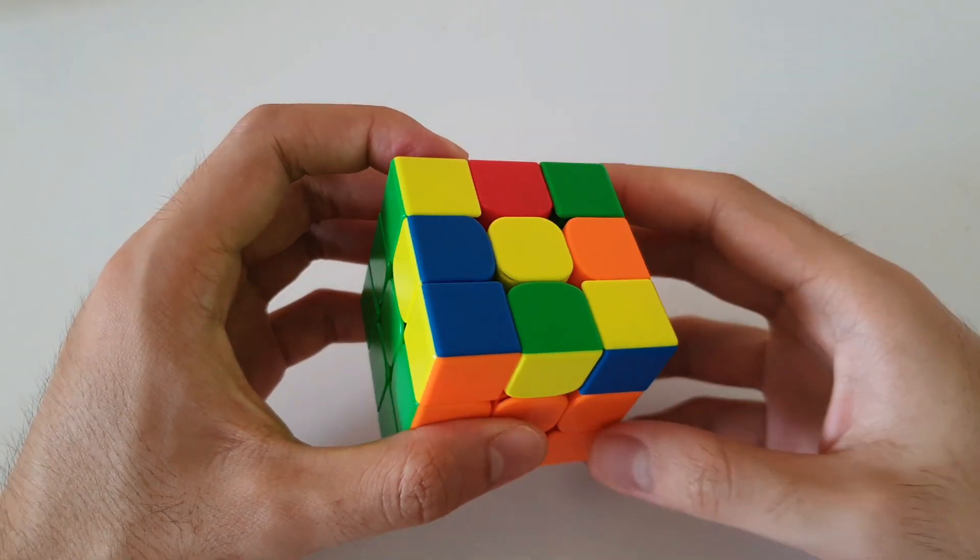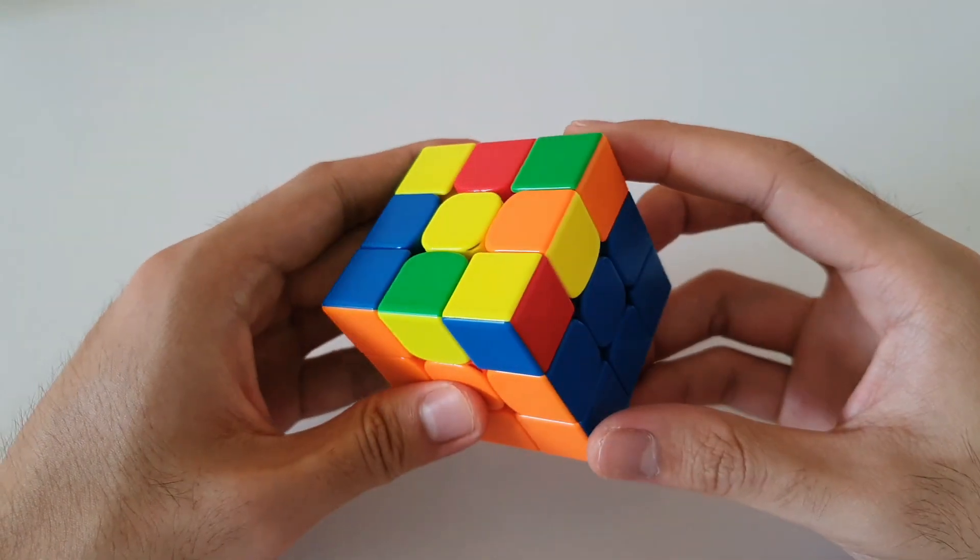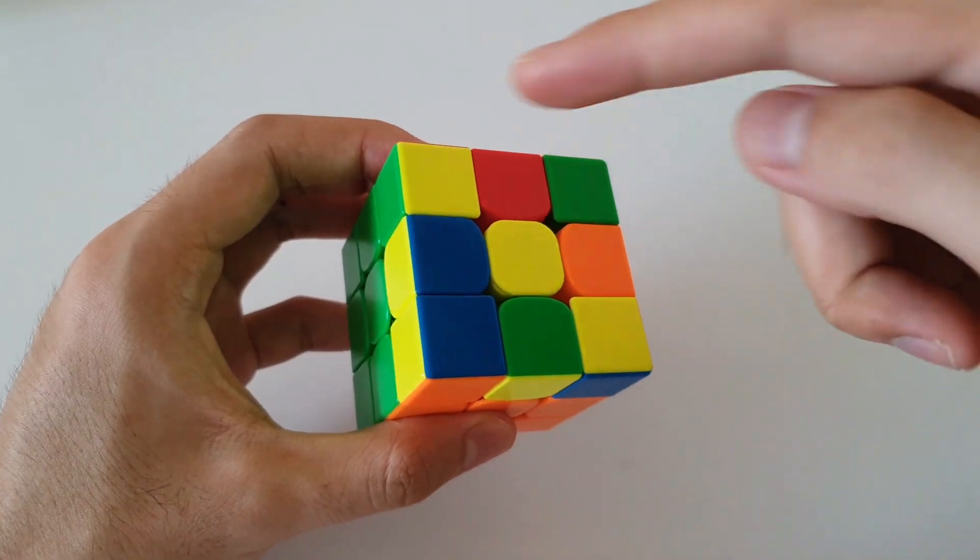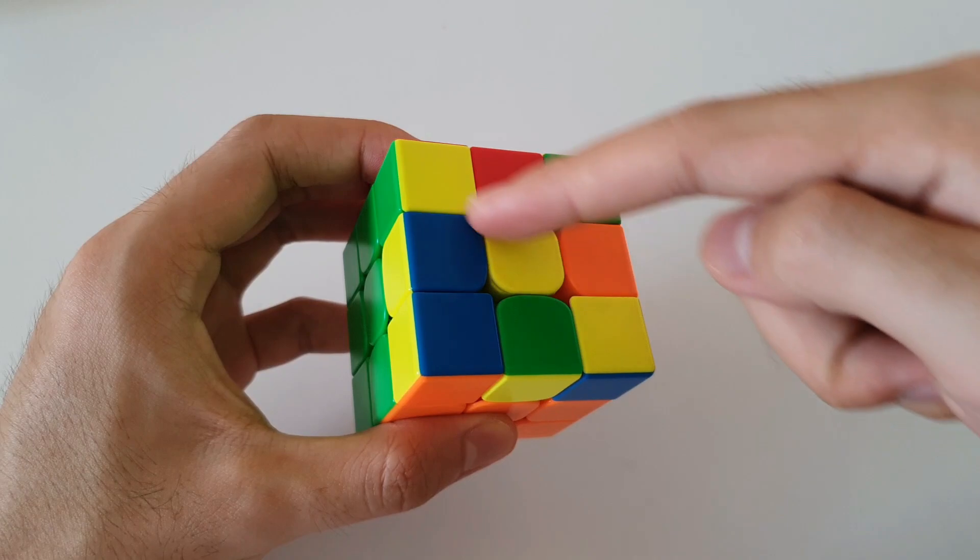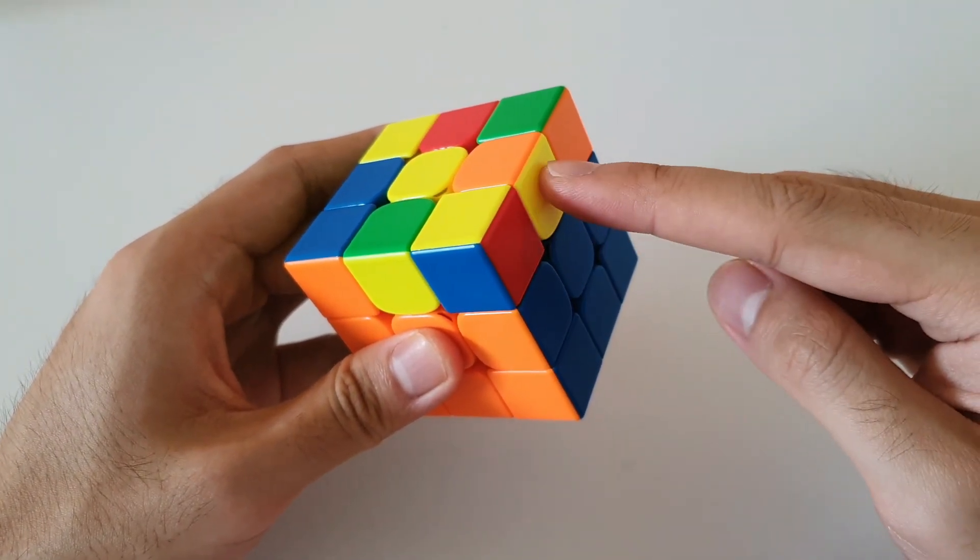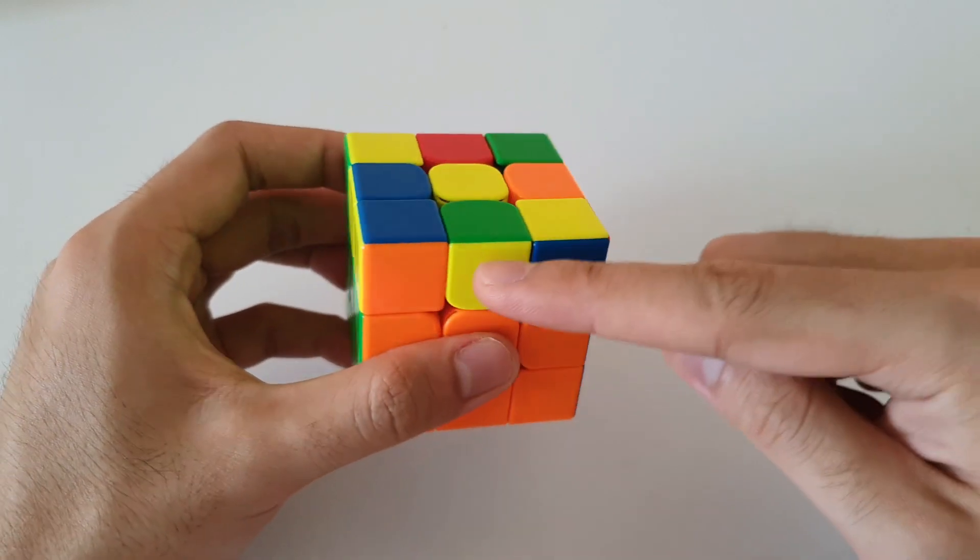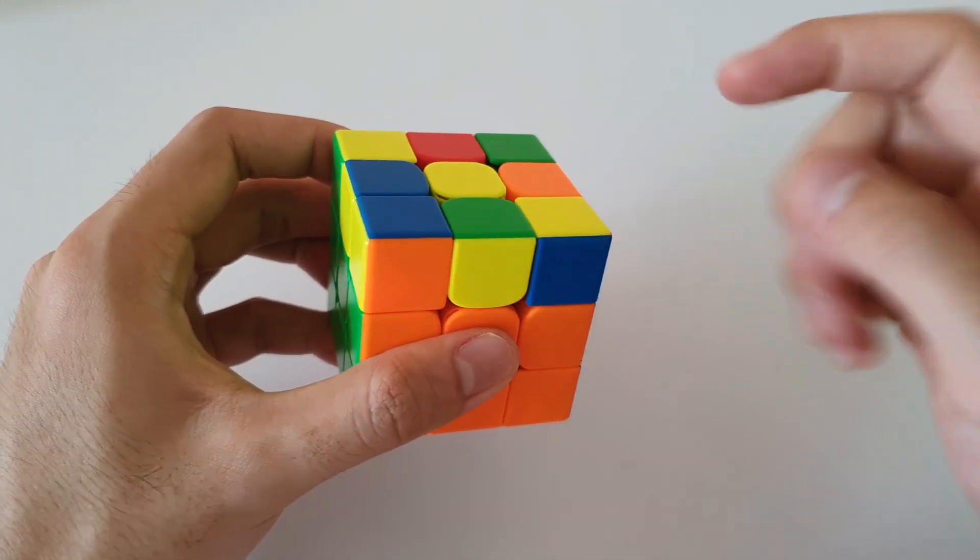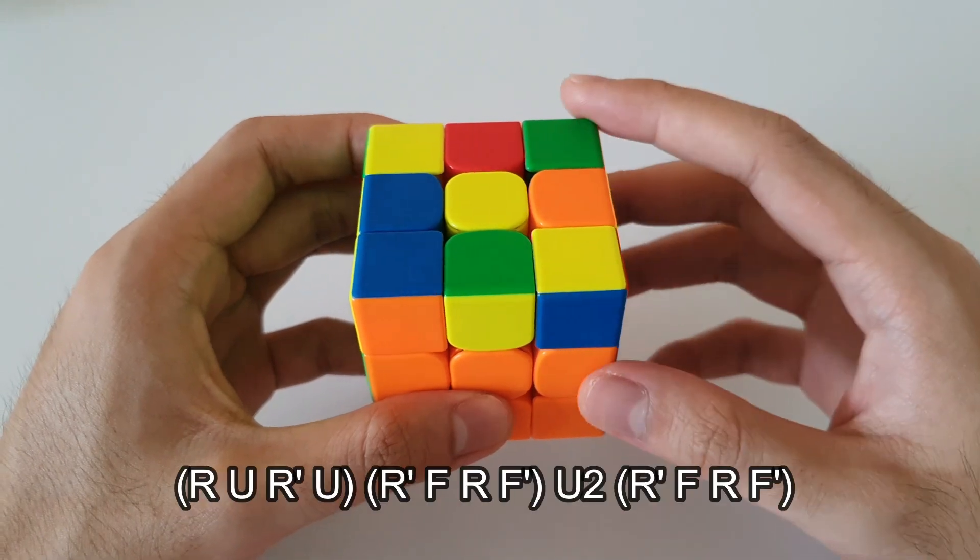So the second last F2L case is this one here. It can be recognized with the yellow corners forming a diagonal on the top layer here. We want to hold it so that one of the single edges is on the right side and the other single yellow edge is facing the front.